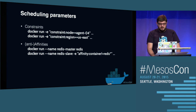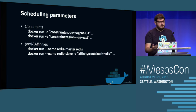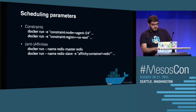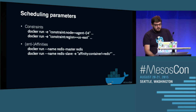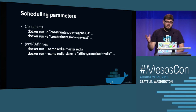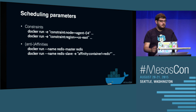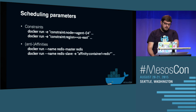We also have affinities and anti-affinities. Simple example: you want to start a Redis cluster, so you start by launching the master. After that you start your slave, but you don't want your slave on the same machine as the master — because if the machine goes down, you lose everything. So using anti-affinity, when you start the slave, you specify you don't want to be on a machine where there's already a container starting with Redis running. It excludes all offers that don't match the affinity.